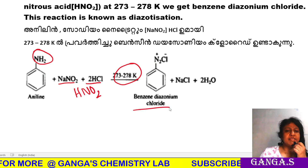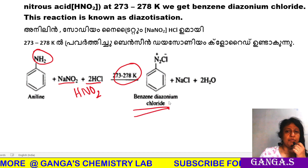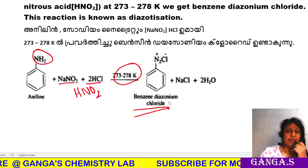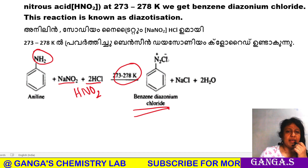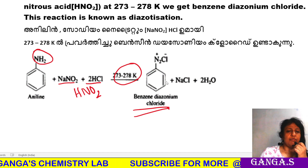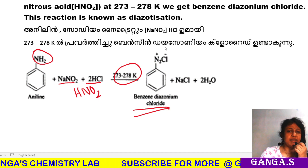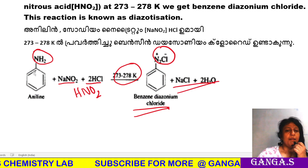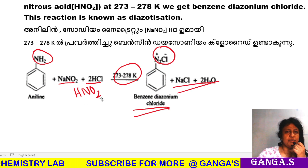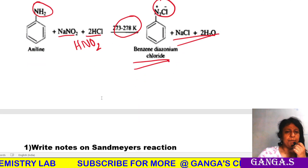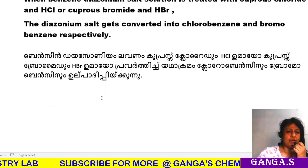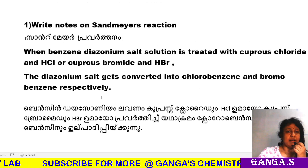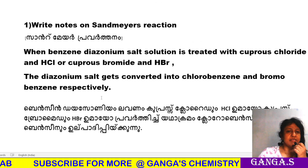Then we get benzene diazonium chloride, written as N2Cl. We use benzene diazonium chloride, and now we can get chlorobenzene. The diazotization reaction is now complete.